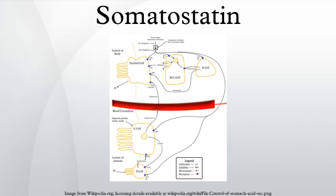Synthetic substitutes: Octreotide is an octapeptide that mimics natural somatostatin pharmacologically, though it is a more potent inhibitor of growth hormone, glucagon, and insulin than the natural hormone and has a much longer half-life. Since it is absorbed poorly from the gut, it is administered parenterally. It is indicated for symptomatic treatment of carcinoid syndrome and acromegaly, and is also finding increased use in polycystic diseases of the liver and kidney.